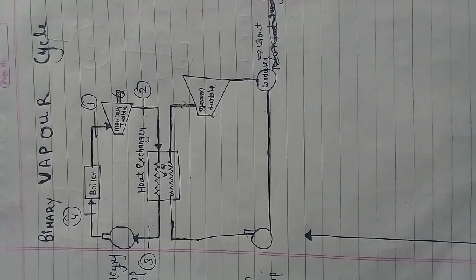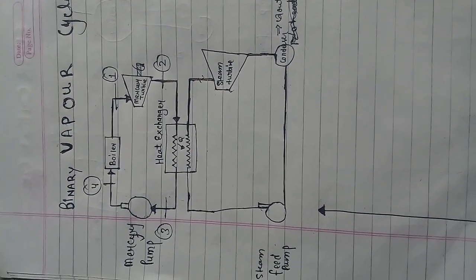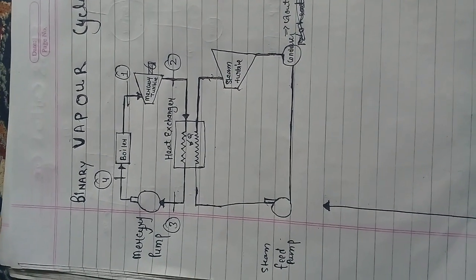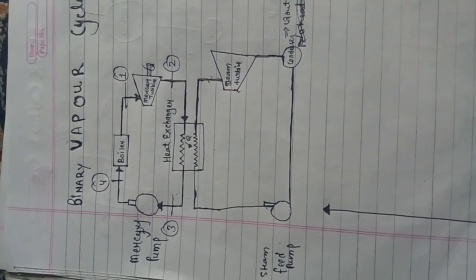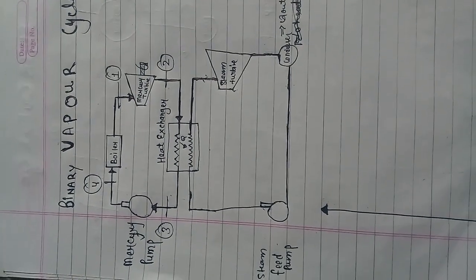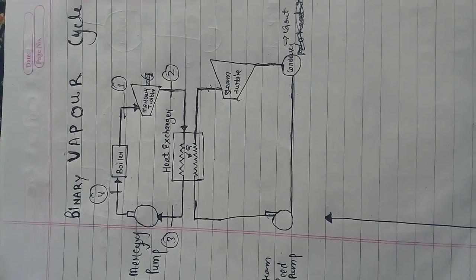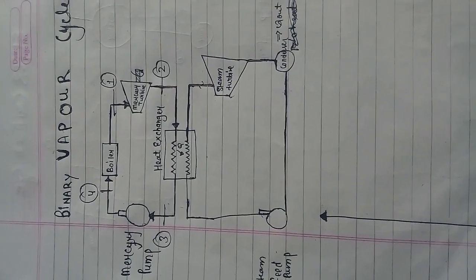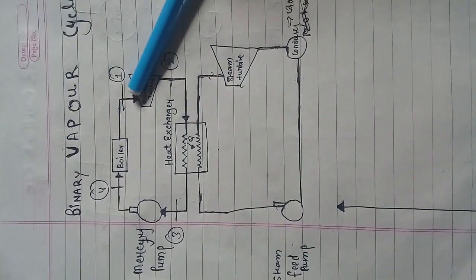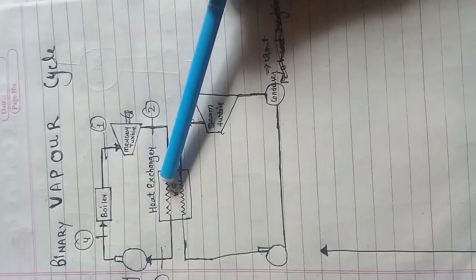Today we are going to discuss the binary vapor cycle. There are two cycles to be operated: one is the mercury cycle and the other is the steam cycle. The mercury cycle operates at high temperature. This is the mercury turbine.